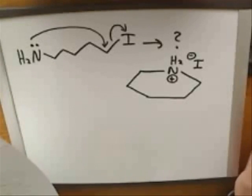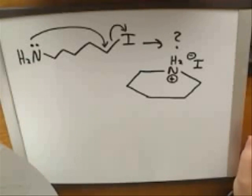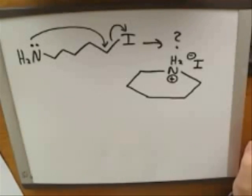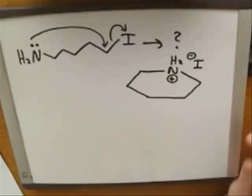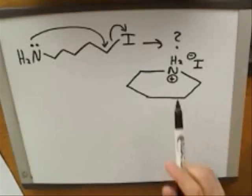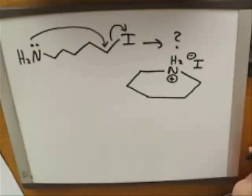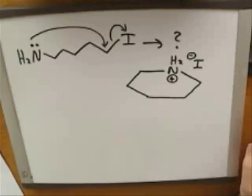One of the things that often gives people difficulty is figuring out where to put the bonds in the product. For example, a lot of students who tried to draw this product on their own probably didn't realize we were going to end up with a cyclic product — they didn't put the bonds in the right place. So one thing we're going to learn is where to put the bonds correctly.